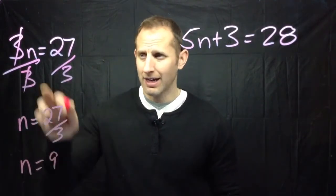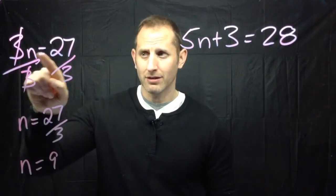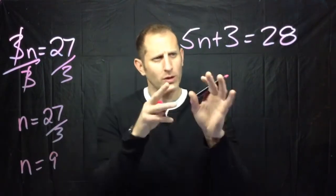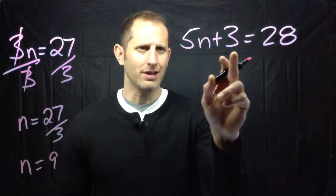And if I plugged 9 into n, 3 times 9 is 27. So I know that it works. Now this one is a little bit more confusing because we've got this extra little three guys here. We've got 5n plus 3 is equal to 28.